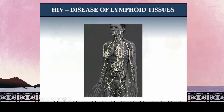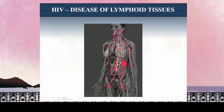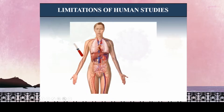Today what I hope to do is to talk to you about and to convince you of the importance of lymphoid tissues in viral persistence. In particular, it's important to remember that there are lymphoid tissues all throughout the body. There are several hundred lymph nodes throughout the human body — estimated anywhere from 200 to 500, depending on an individual.